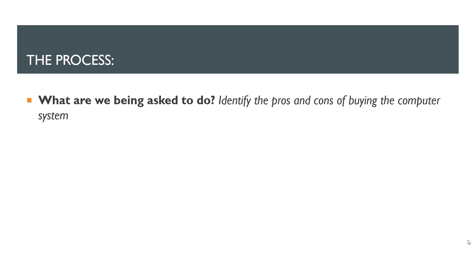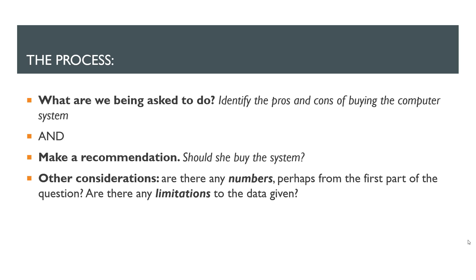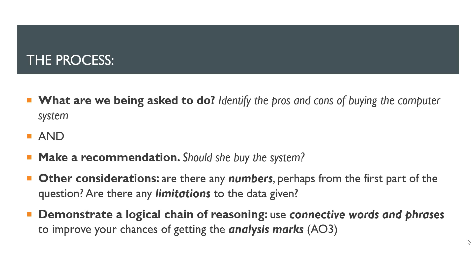So the process: what are we being asked to do? Identify the pros and cons of buying the computer system — that's the assess part — and then make a recommendation: should she buy the system? Yes or no, and why? Other considerations: are there any numbers from the first part of the question that we can use? Are there any limitations to the data we've been given — anything else we need to know? And we're going to demonstrate a logical chain of reasoning using connective words and phrases to improve our chances of getting the AO3 marks. Without using connectives, you're not going to get to the AO3 marks.